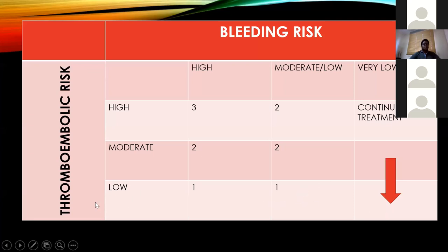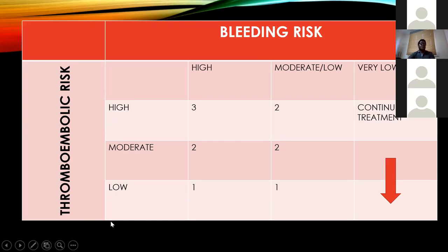For patients with low thromboembolic risk, regardless of bleeding risk — Plan 1 — stop warfarin five days prior, place on low molecular weight heparin at prophylactic doses until 24 hours preoperatively, check INR before surgery, and within 24 hours postoperatively restart prophylactic low molecular weight heparin. Start warfarin 24 hours later based on bleeding risk. For patients with moderate thromboembolic risk and moderate bleeding risk — Plan 2 — bridge with prophylactic doses of low molecular weight heparin using the same concept.